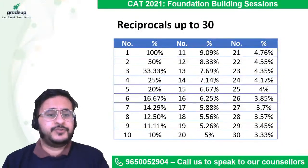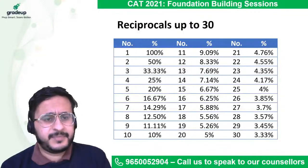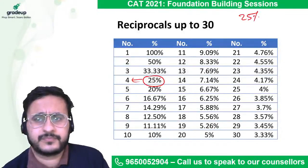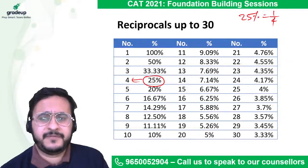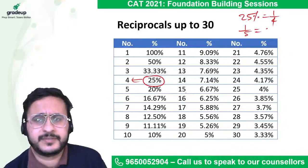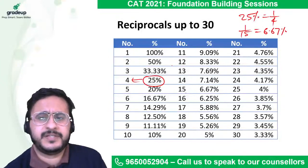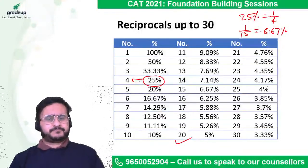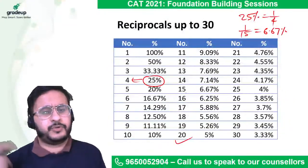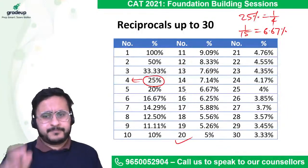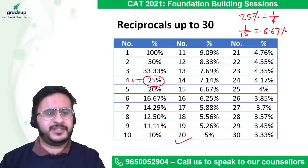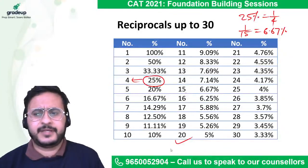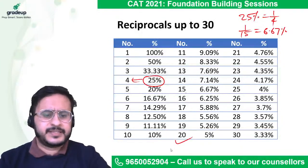One important thing in percentages is knowing the reciprocals of numbers — this comes very handy. Instead of writing 25 percent, you can write 1/4. Instead of writing 1/15, you can write 6.67 percent. You should know these interchangeably at least up to 20. If you hear 12.5 percent, that should automatically come to mind as 1/8. Make this list, write it somewhere, and practice some problems using it. You will realize it becomes quite fast to solve questions when you know these conversions.